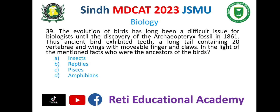Question number 39. The evolution of birds has long been a difficult issue for biologists until the discovery of the Archaeopteryx fossil in 1861. Ancient birds exhibited teeth, a long tail containing 20 vertebrae, and wings with movable fingers and claws. In light of this, who were the ancestors of the birds? Options: A. Insects, B. Reptiles, C. Pisces, D. Amphibians. The correct option is B. Reptiles.